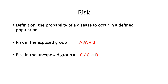When we are analyzing a population's health status, we need to take into account risk factors and exposures that can make them susceptible to different illnesses. An important term discussed in each of the five core public health areas is risk. Risk is defined as the probability of a disease to occur in a defined population.